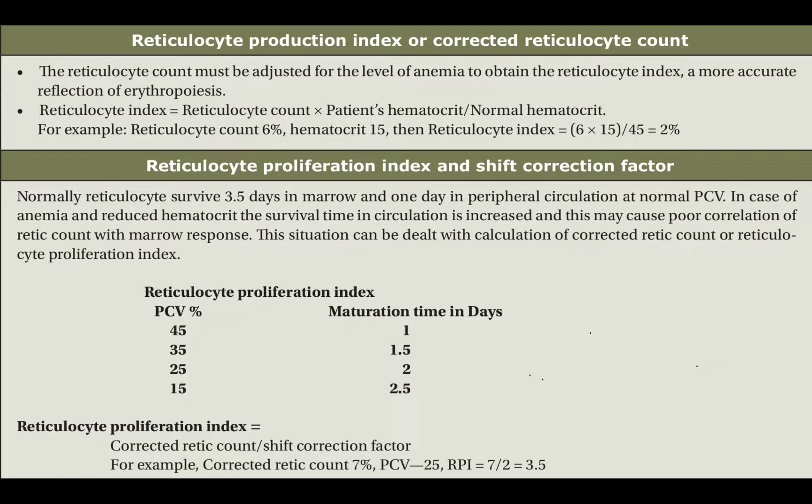This is the picture I already discussed in my previous video. The corrected retic count formula is the same as I mentioned in my first slide. The retic multiplied by patient hematocrit divided by normal hematocrit. Normal hematocrit is considered as 45. And then we have to count the reticulocyte production index or RPI.